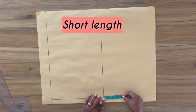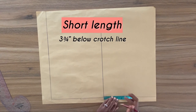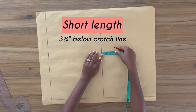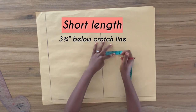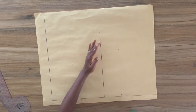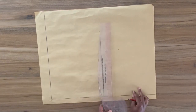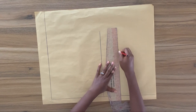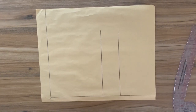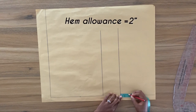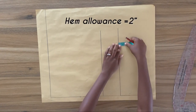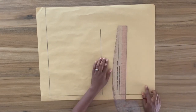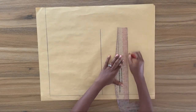To determine the length of the pants, I'm going to come down from the crotch line three and three quarter inches. Coming down with this measurement is going to work for any height and any size, as long as you're working with your accurate crotch depth measurement. I'm going to square a horizontal line right across this point — this line is the bottom of the band. From this point I'm going to add two inches hem allowance, so I square out a horizontal line right across this point. This is the hem allowance line.